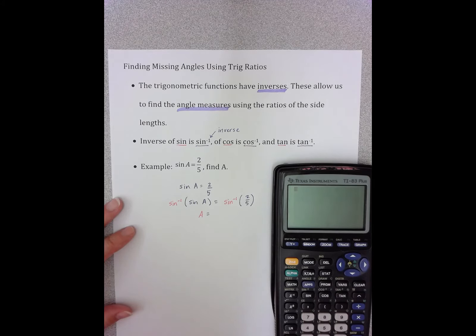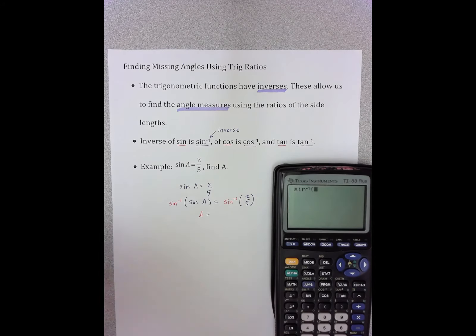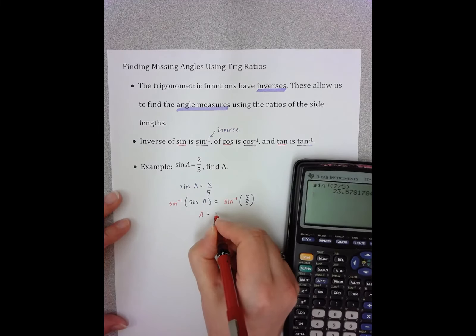And here are my three trig ratio buttons, sine, cosine, and tangent. But because I'm trying to find sine inverse, I need the yellow button that's above the sine button, which tells me to press second, sine. And you can see now I have sine inverse in parentheses. In that parentheses, I'm going to put the 2 divided by 5. And I'm going to press enter.